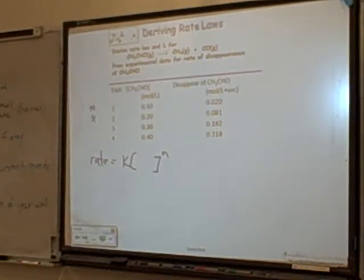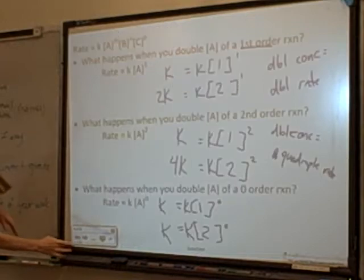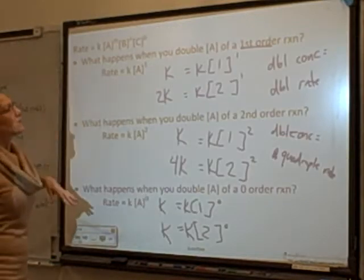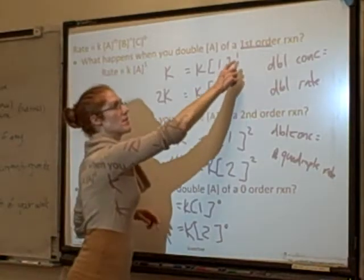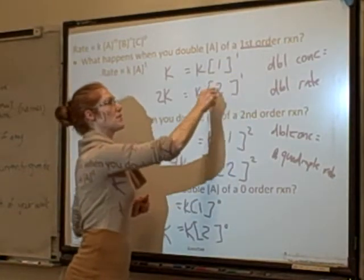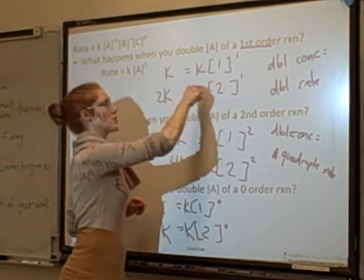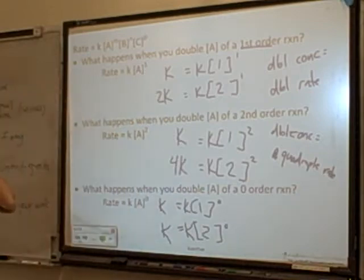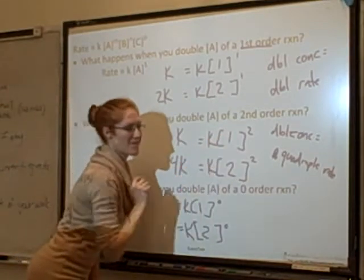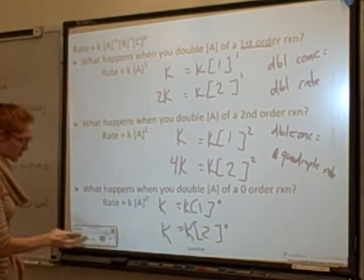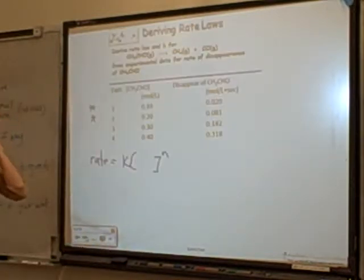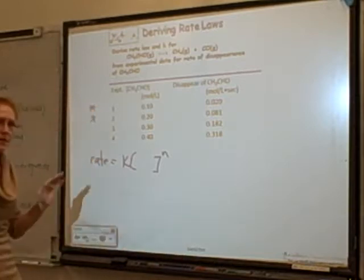Let's go ahead and see how we can actually determine a rate law. We just found out that you can figure out what order you have by changing concentrations. If it's first order, doubling the concentration doubles the rate. If it's second order, doubling quadruples the rate, and if it's zero order, doubling the concentration doesn't change the rate. So let's actually plug in some data and see how we do this.